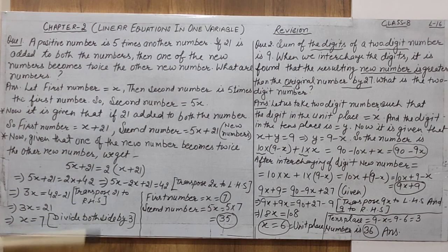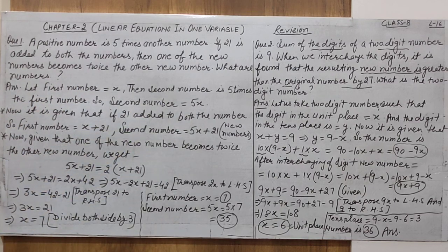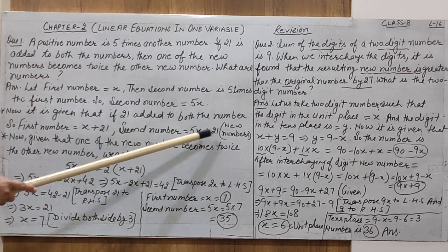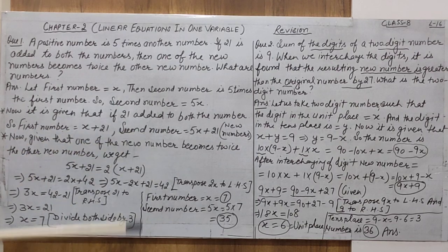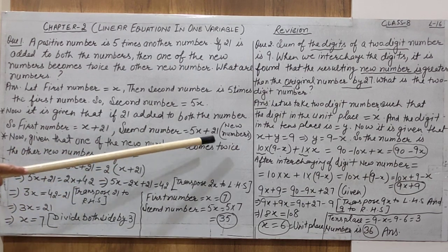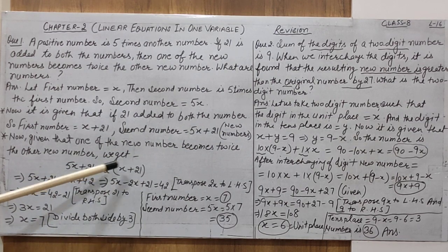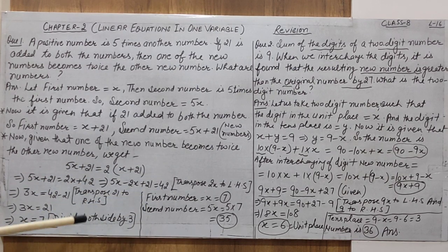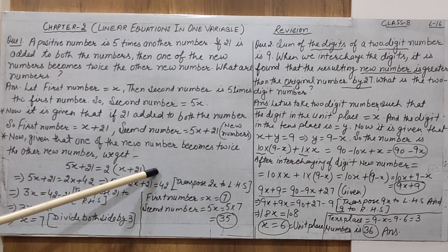To recap Question 1: if the first number is x then the other is 5x (5 times). After adding 21 to both, we get two new numbers. The greater new number 5x + 21 is twice the smaller new number x + 21. Solving using transpose and division, we get the first number is 7 and second number is 35.